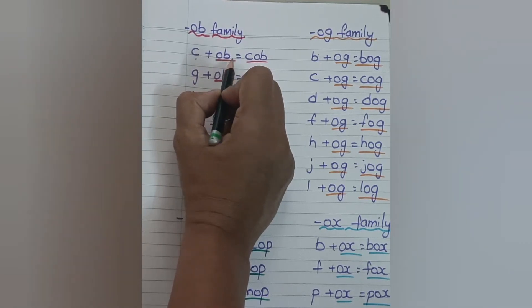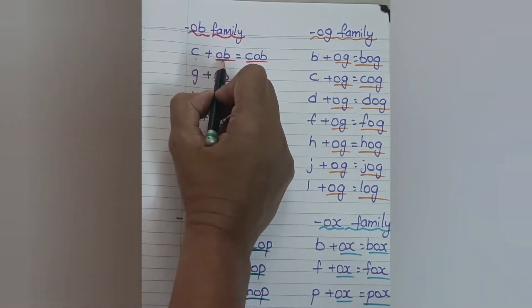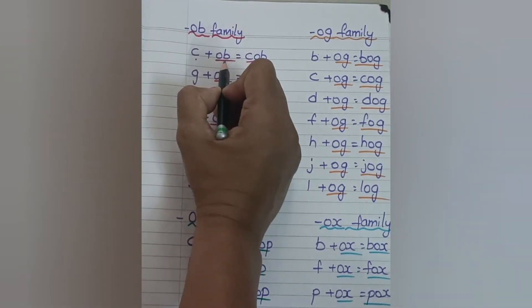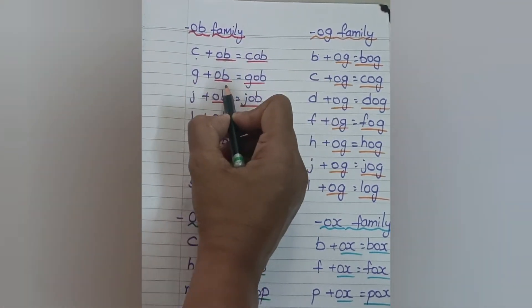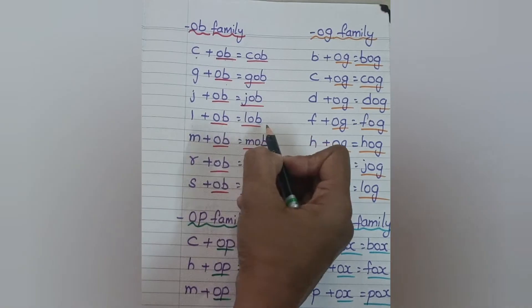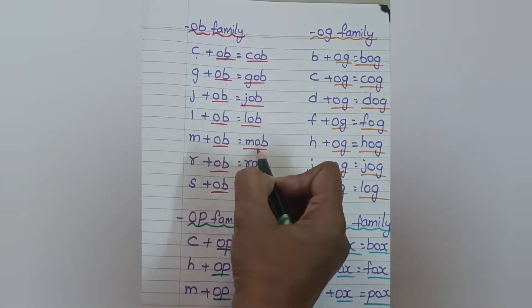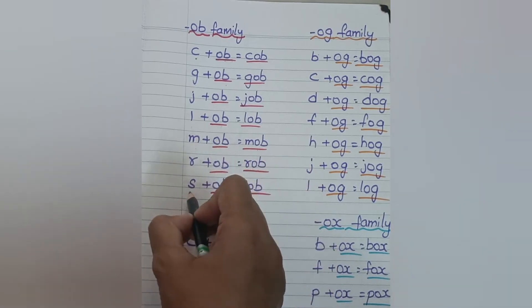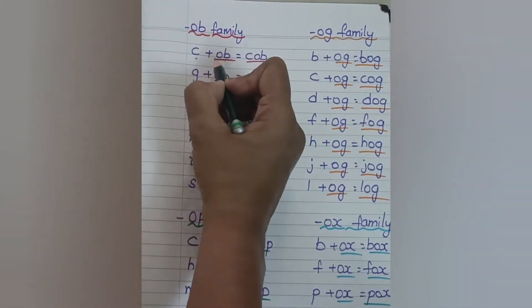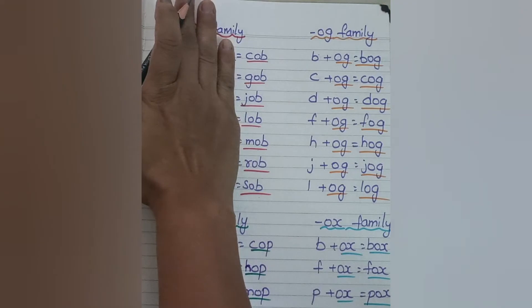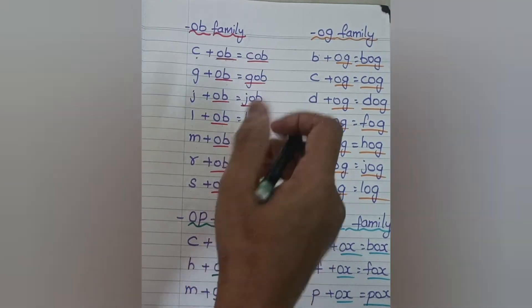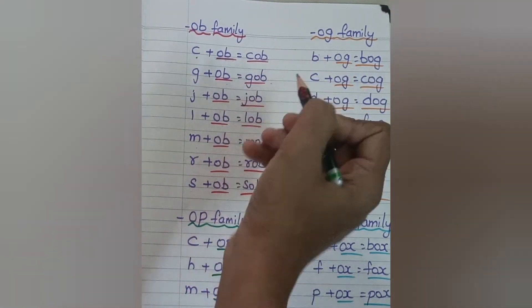They won't be reading them separately because they already know the sound of each letter. That means they have to read them together. After introducing the individual sound and two-letter word, give the list of three letters only. With practice, they will be able to read the three-letter words directly.